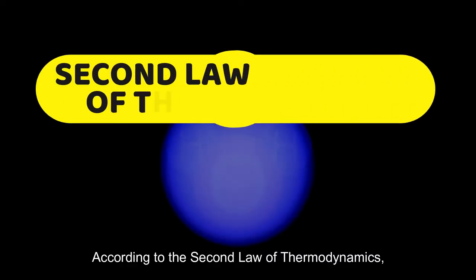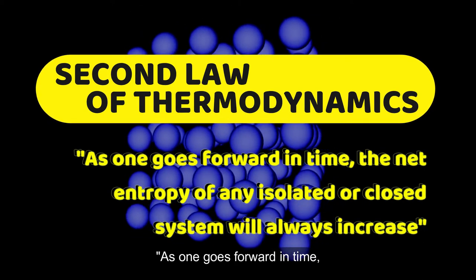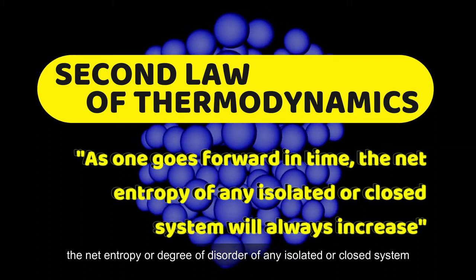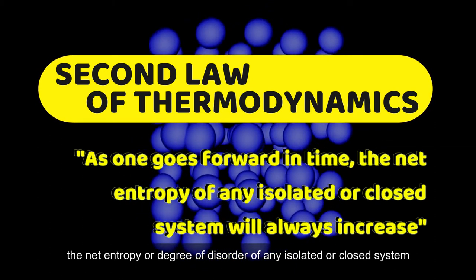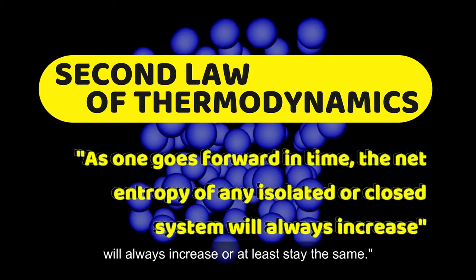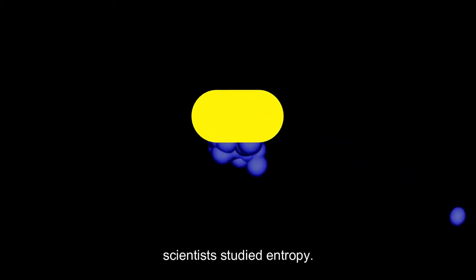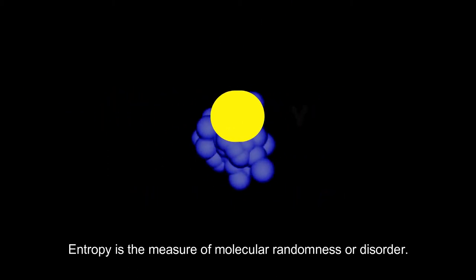According to the second law of thermodynamics, as one goes forward in time, the net entropy or degree of disorder of any isolated or closed system will always increase or at least stay the same. So to put things in order, scientists studied entropy. Entropy is the measure of molecular randomness or disorder.